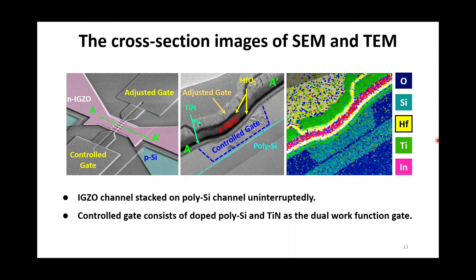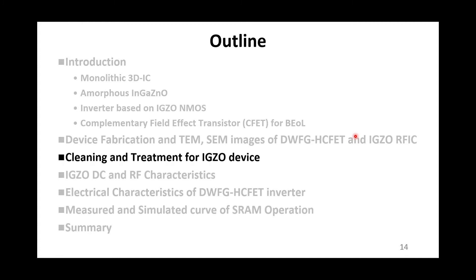In the left figure, this is control gate and this is adjusted gate. They can be separated or connected with each other. In the center image, we can observe the uninterrupted IGZO stacked on poly channel. And the control gate is constructed by TiN and doped-poly as the dual-work function gate. First, the surface status is investigated.